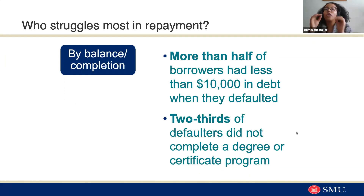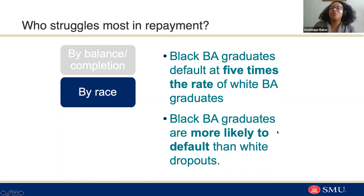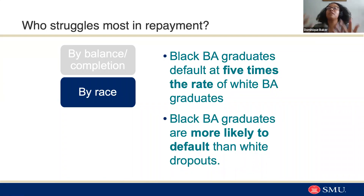So we generally say that if you can get students to complete, they're way more likely to be able to manage their student loan payments. That is generally true for most student groups — except, when we look by race, Black bachelor's degree graduates actually default at roughly five times the rate of white bachelor's degree graduates. In fact, Black bachelor's degree graduates are more likely to default — more likely to struggle in repaying their loans — than white students who drop out of college. That's huge because it means Black students who have completed their bachelor's degree, who should be getting the benefits from earning that degree, are more likely to struggle in repayment than white students who got the debt and then dropped out.